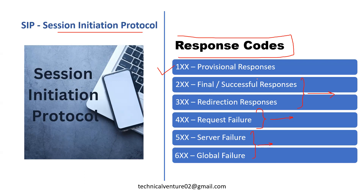Today I'm going to discuss 1xx provisional responses, which we also call informational responses. What that means is your user agent server who received a particular request — let's say an invite request — needs to respond with something. If it's performing some further action and doesn't have a definitive response, then we send these 1xx responses.